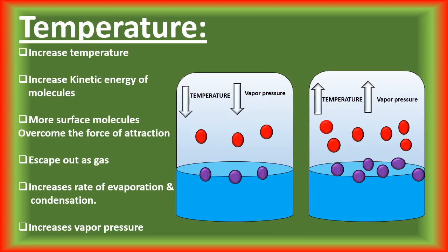The second factor affecting vapor pressure is temperature. Temperature is directly proportional to vapor pressure — with an increase in temperature, vapor pressure increases, and with a decrease in temperature, vapor pressure decreases. This is because with increasing temperature, the kinetic energy of molecules increases, more molecules overcome the force of attraction and change from the liquid to the gaseous state, increasing the rate of evaporation and condensation, and as a result the vapor pressure increases.